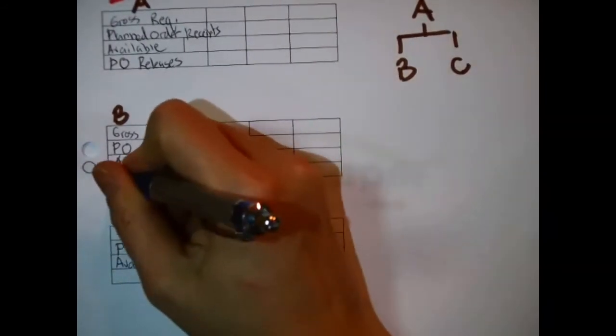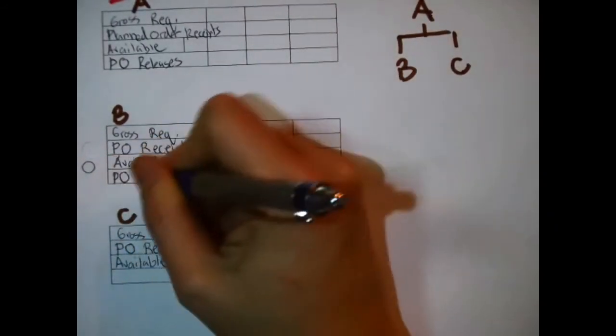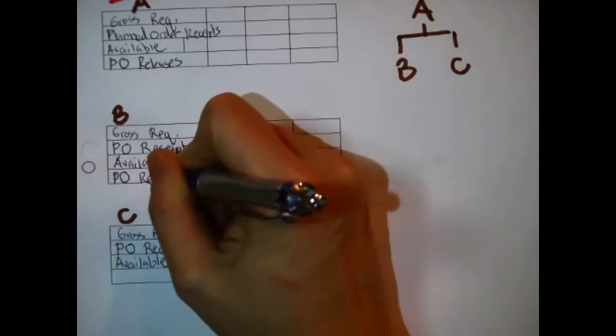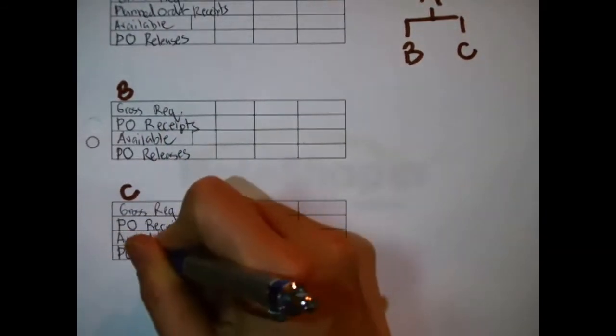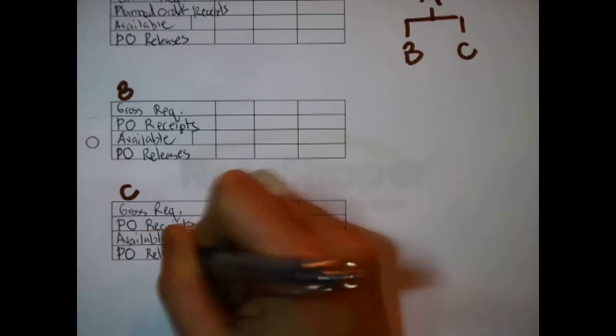This is the actual plan. P for planned, O for order, releases. P for planned, O for order, releases.